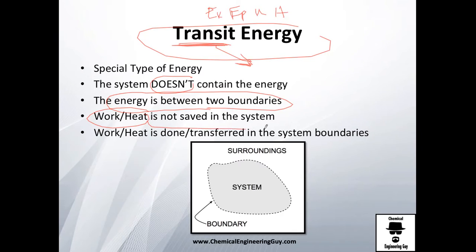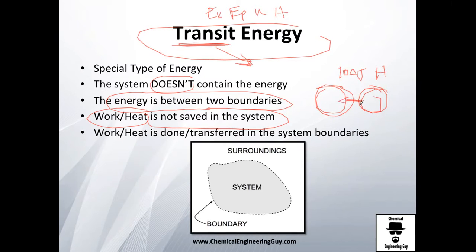With work and heat, you cannot say that in the system you have 100 joules of heat, because heat is between two bodies — your system and the other system — and they interact, they exchange energies. One loses internal energy, this one loses enthalpy, this gains heat, and you have your heat or even work.